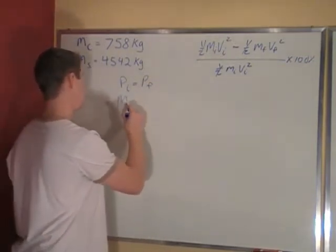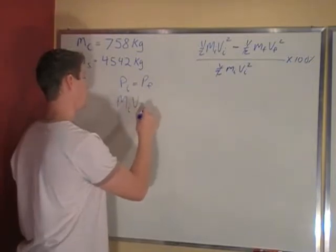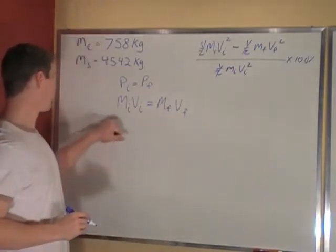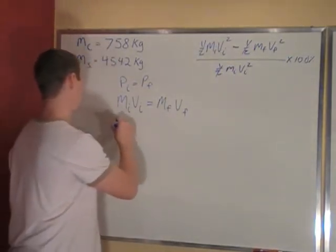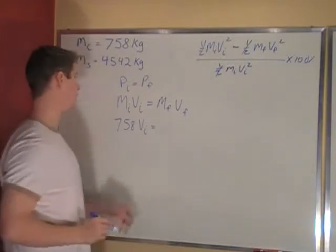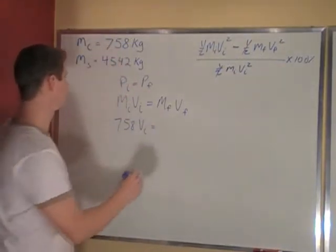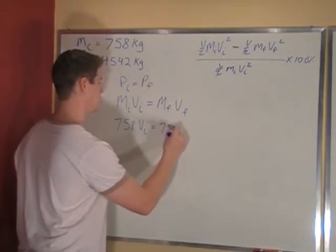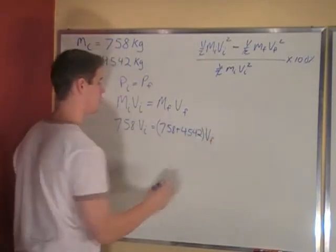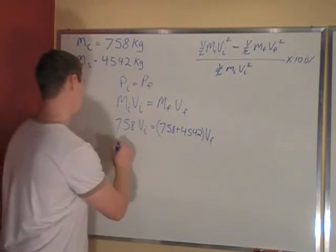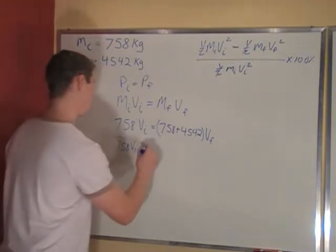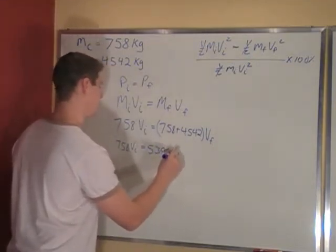So our initial mass is just 758 vi. And our final mass is the sum of these two times the final velocity. So we add this up and we get 758 vi equal to 5300 vf.